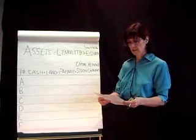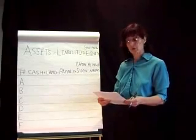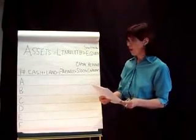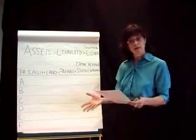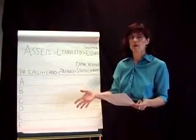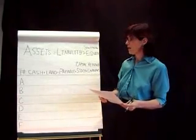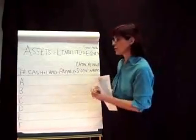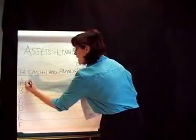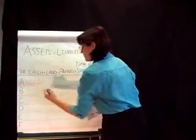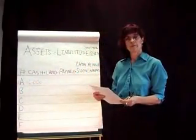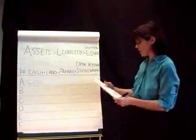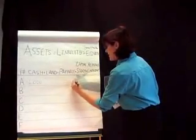The first transaction: Dr. Laundrie deposits $6,000 in a bank account in the name of Family Healthcare PC in return for shares of stock in the corporation. The business is getting cash, so we increase cash on the asset side. He's also purchasing shares of stock in the corporation, so that increases our capital stock account by $6,000.